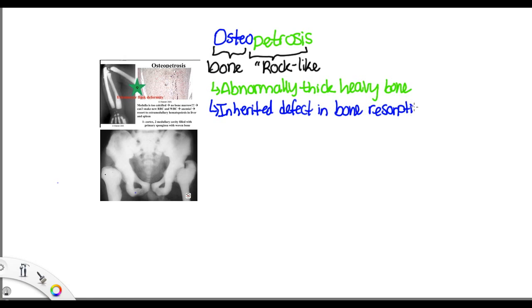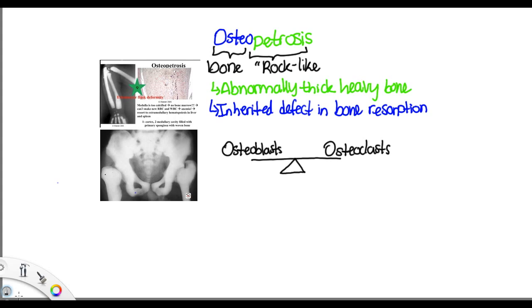It's an inherited defect in bone resorption. Bone formation is a balance between osteoblasts, which lay on bone, and osteoclasts, which resorb bone. This balance is constantly occurring throughout life. A defect in bone resorption — in which you're constantly laying down bone but can't resorb it — results in an abnormally thick and heavy bone. Despite being thick and heavy, it fractures easily. Think of it like a piece of chalk: thick, but you can easily crack it.